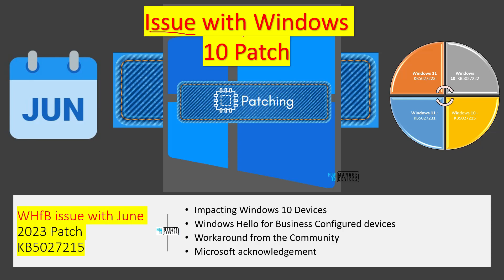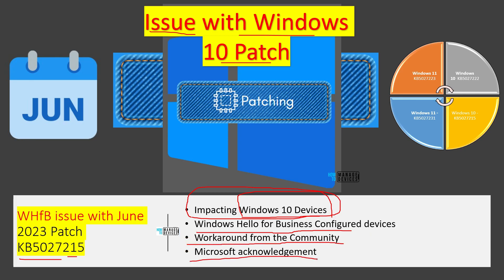Let's have a look at one of the issues with the Windows 10 June patch KB5027215. There are no reports related to Windows 11 on this particular issue — we have seen reports only for Windows 10 devices. This issue happens only if you have configured Windows Hello for Business on your Windows 10 devices. There is a workaround provided by the community, but Microsoft has not acknowledged it yet. Check out the description of the video to get the latest information.